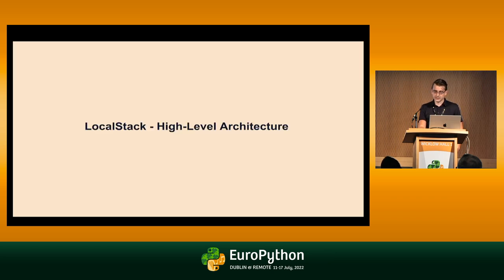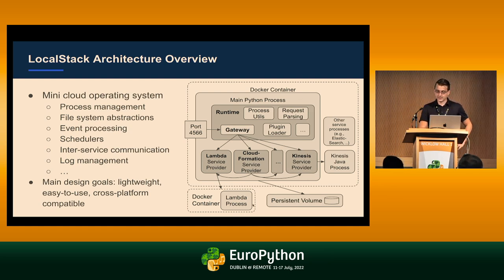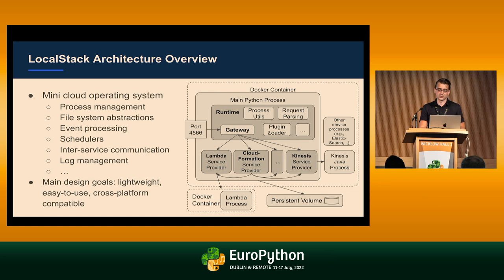The very high-level architecture: LocalStack is written in Python, which is why it's a good fit for this conference. Basically you have a Docker container where everything is running. Then we have the main LocalStack Python process, which has one canonical entry port — port 4566. Then we have the runtime, which consists of utilities for process management, request parsing, plugin loading, and so on. And then the gateway, which is the dispatching logic that forwards an incoming request to the corresponding service implementation.